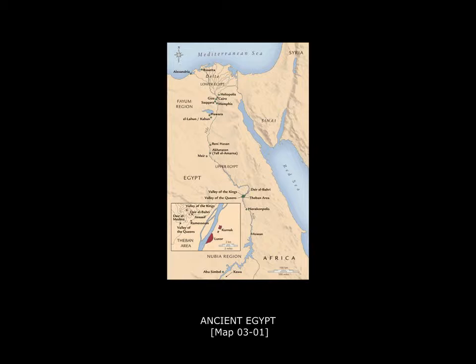Welcome back. In this next episode for Art History 209, I want to talk about Egypt. What we're looking at here is a map of Egypt. The beginning of the Egyptian civilization is dated to what is called the unification of the two kingdoms of Upper and Lower Egypt.